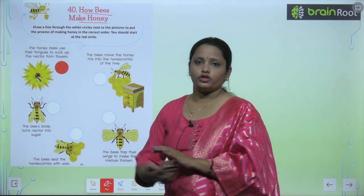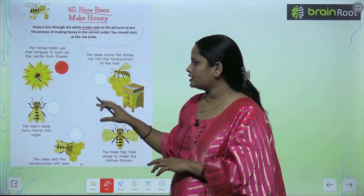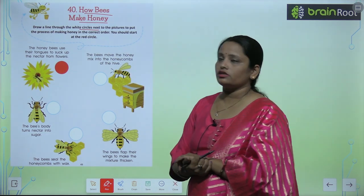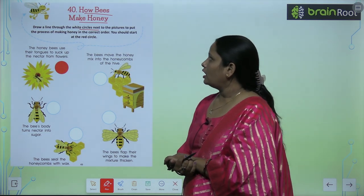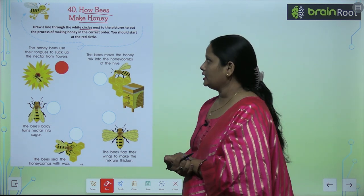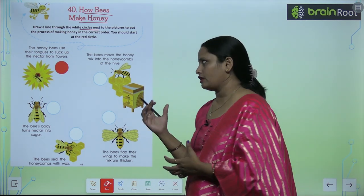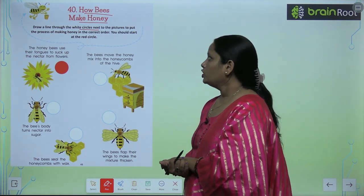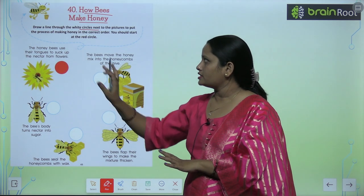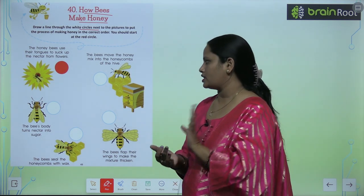What you have to do here is draw a line through the white circles — next to the picture — to put the process of making honey in the correct order. We have to read some information here and match it. You should start at the red circle, then draw lines to where to go next.